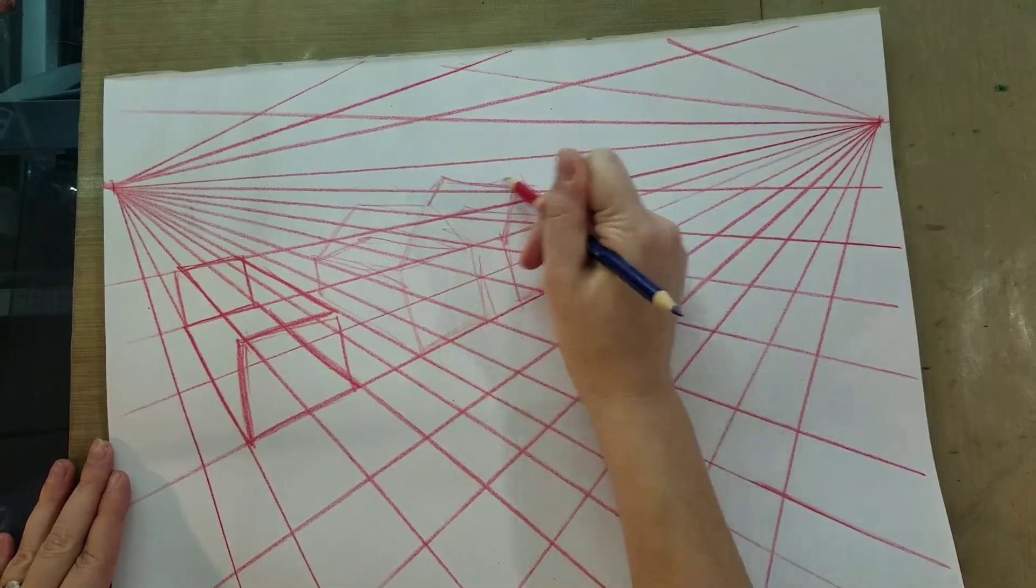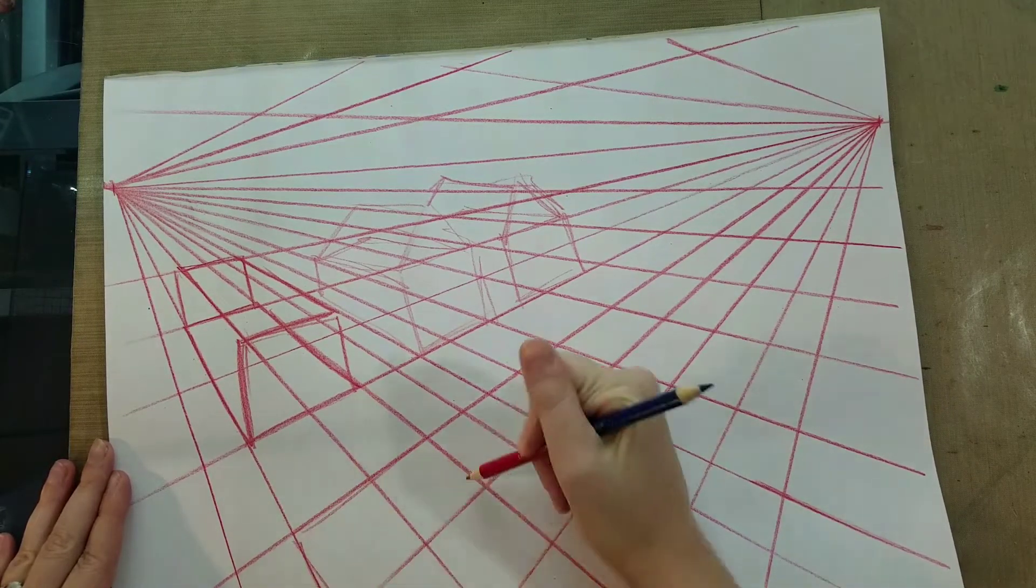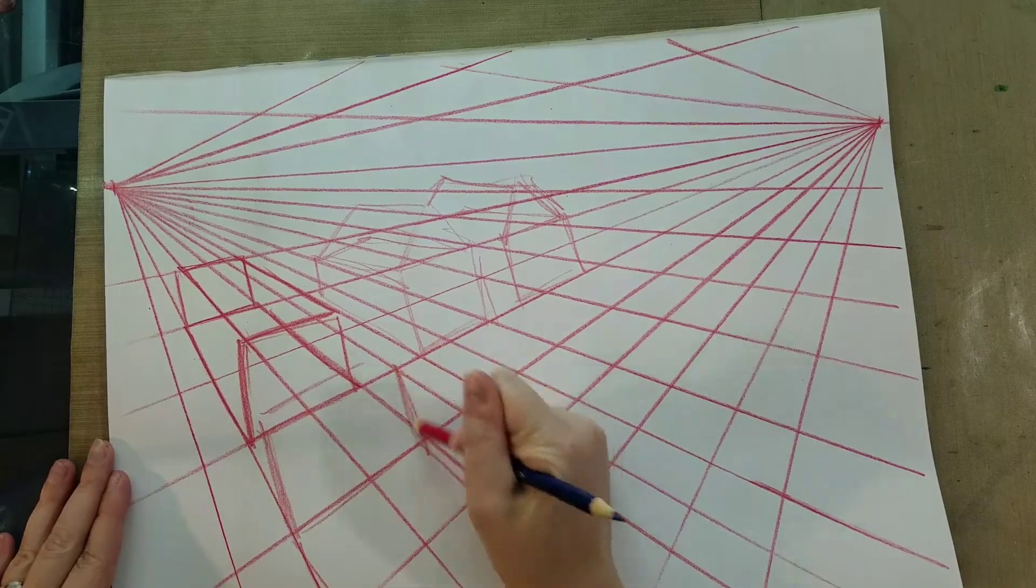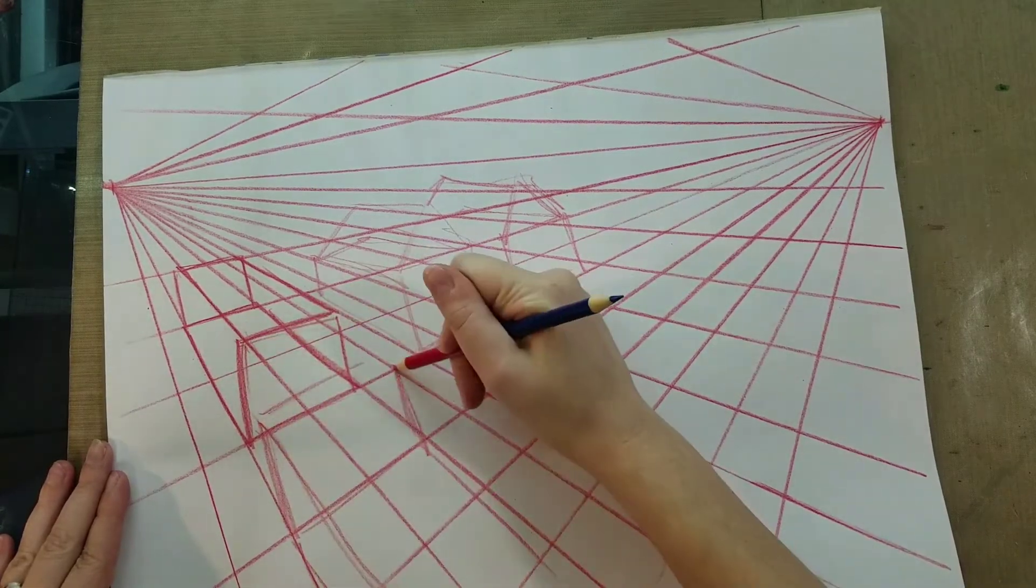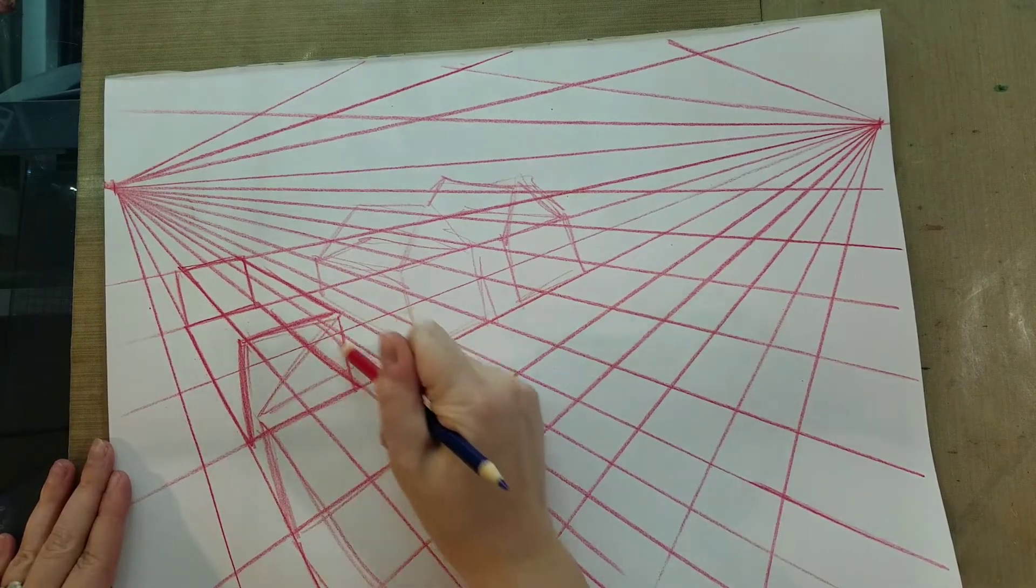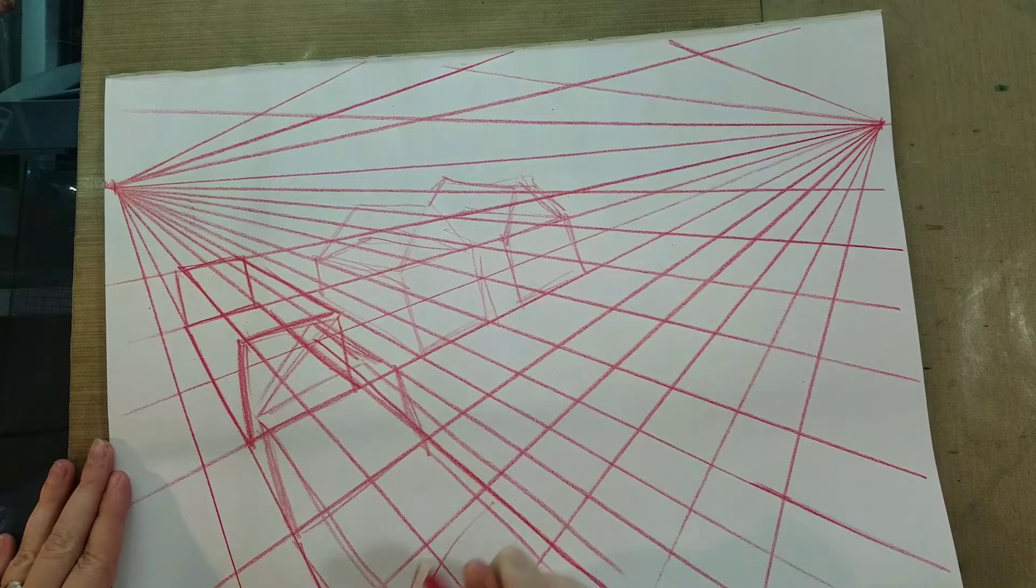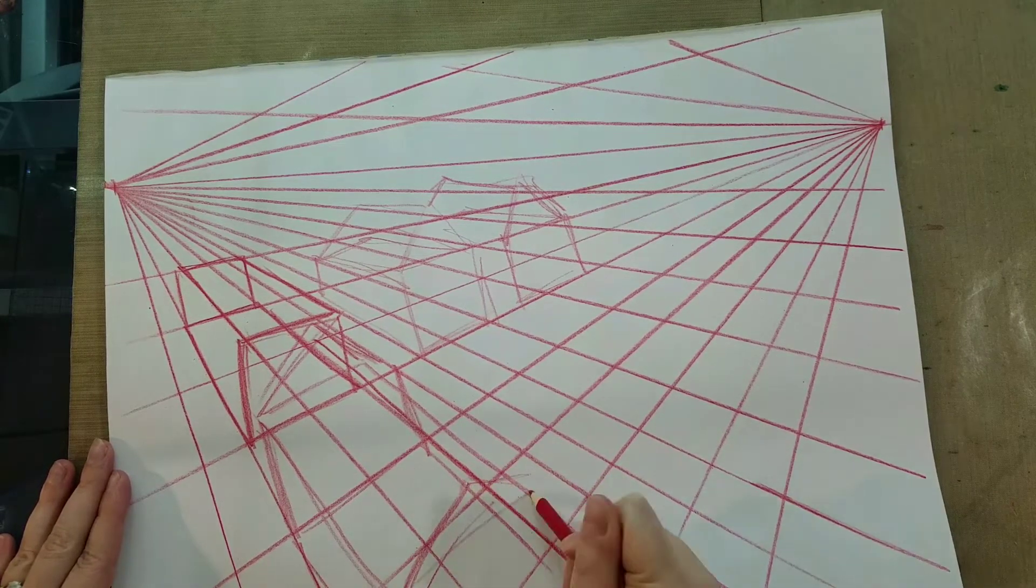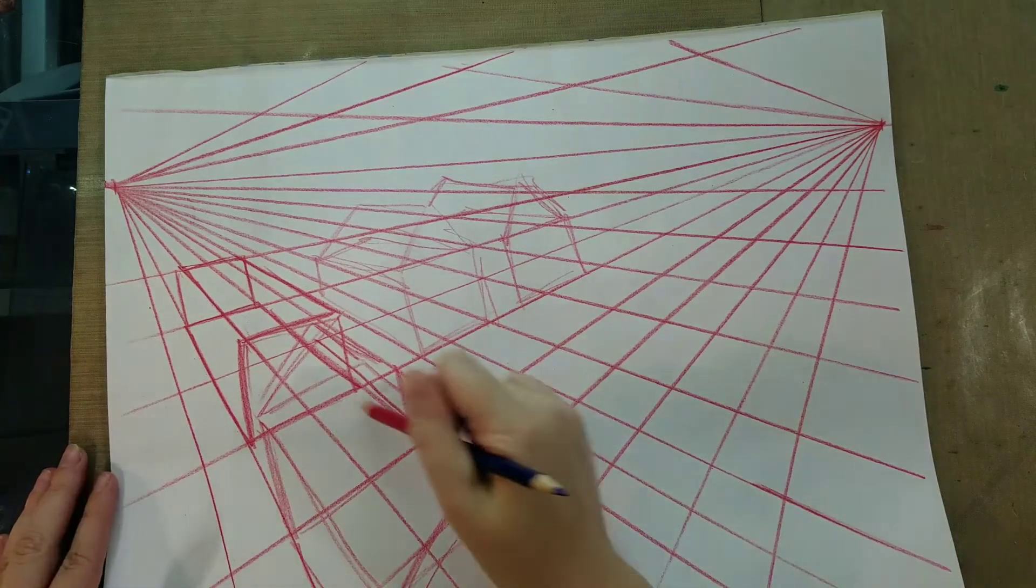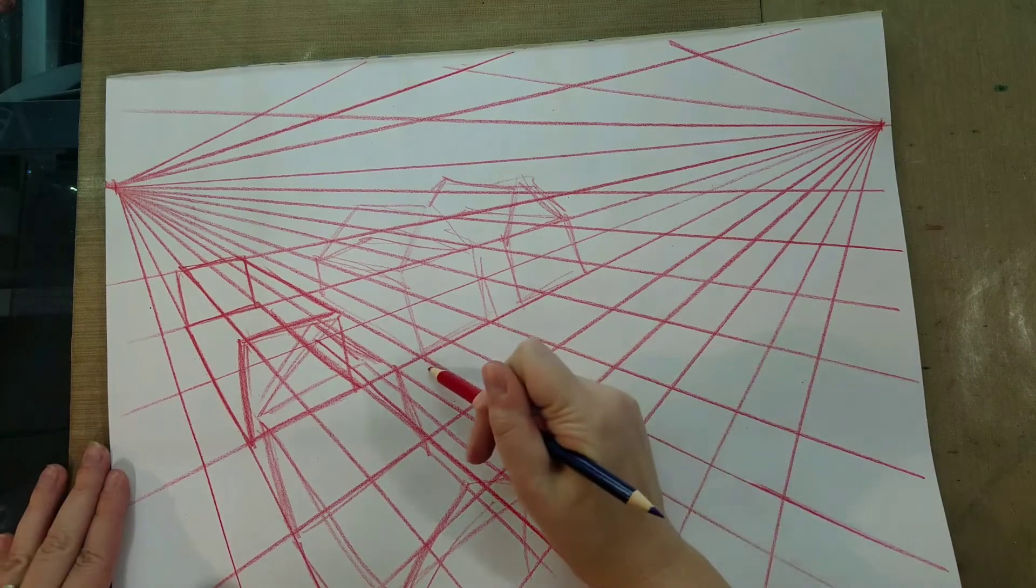This is like a prefab neighborhood. So I start by just kind of loosely sketching in what I want just so that I have an idea. Now these houses are awfully close to each other. It's more like a military barracks than a neighborhood.